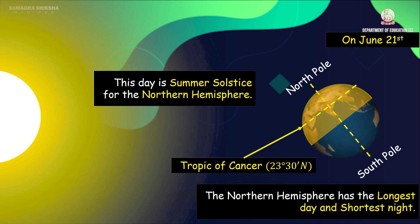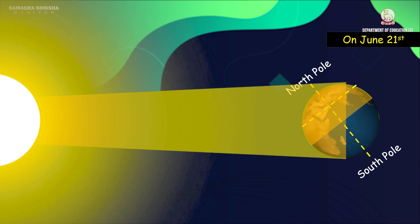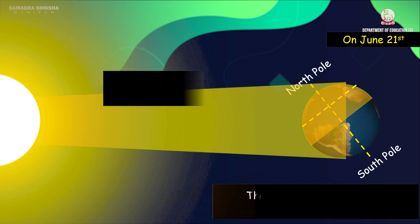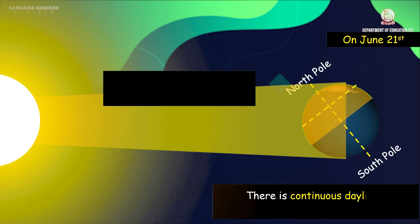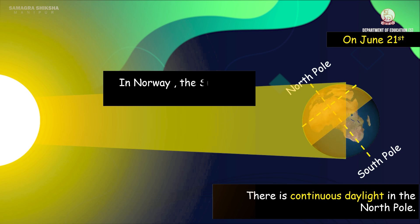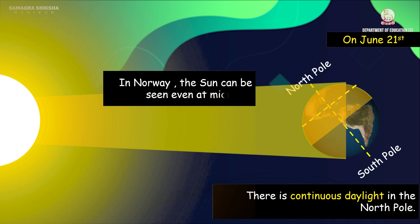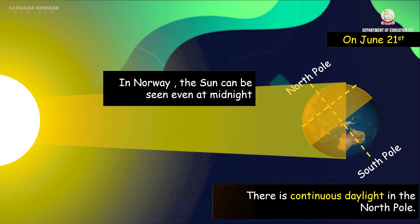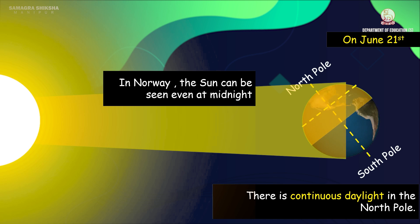There is continuous daylight in the north pole. The sun never sets in this region around the north pole. In Norway, the sun can be seen even at midnight.